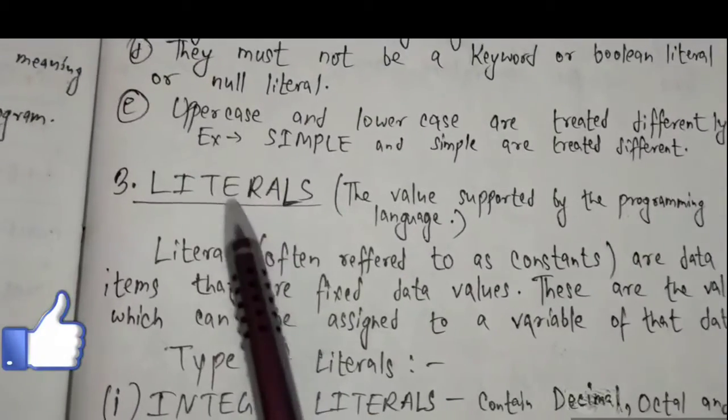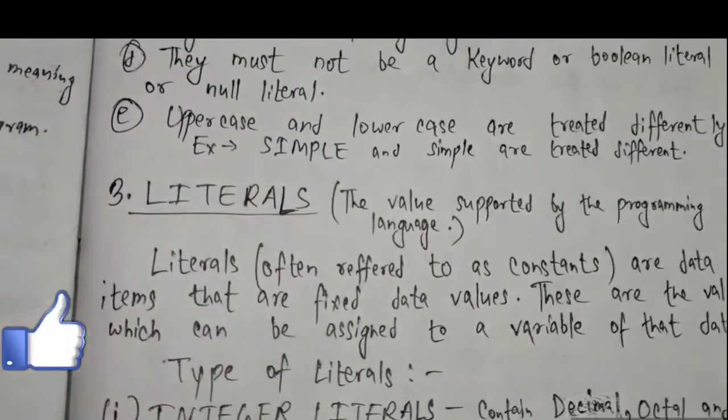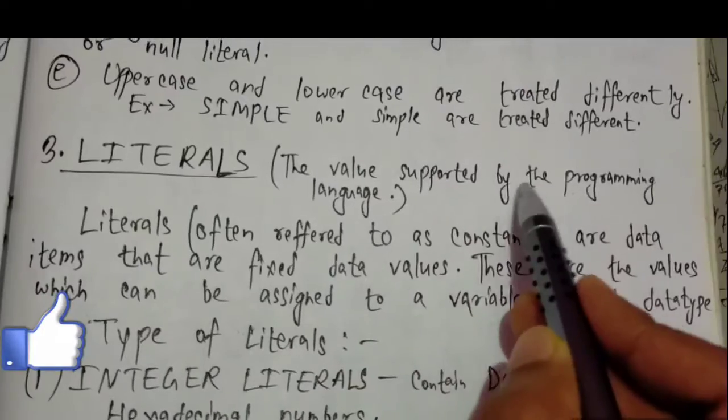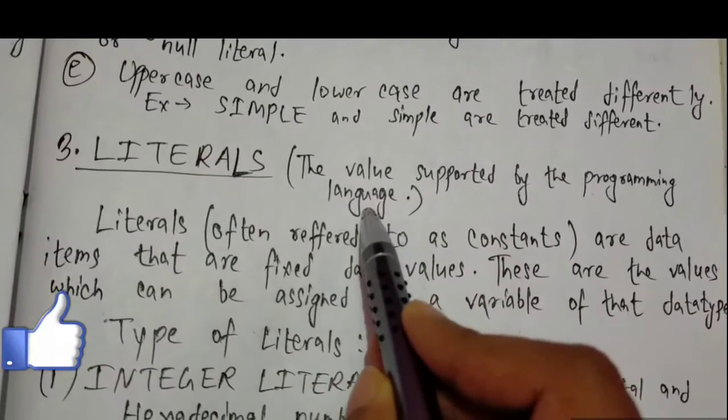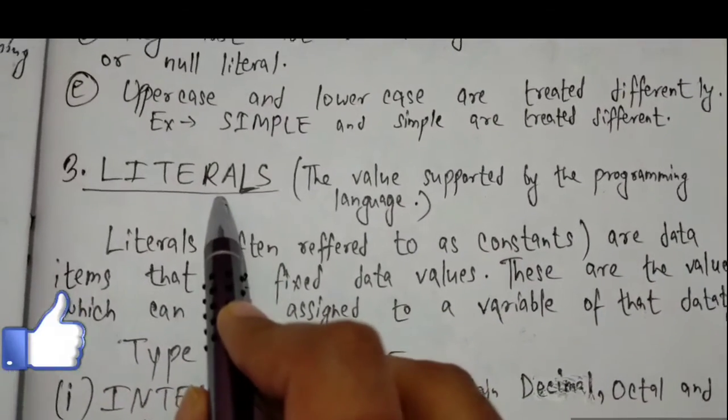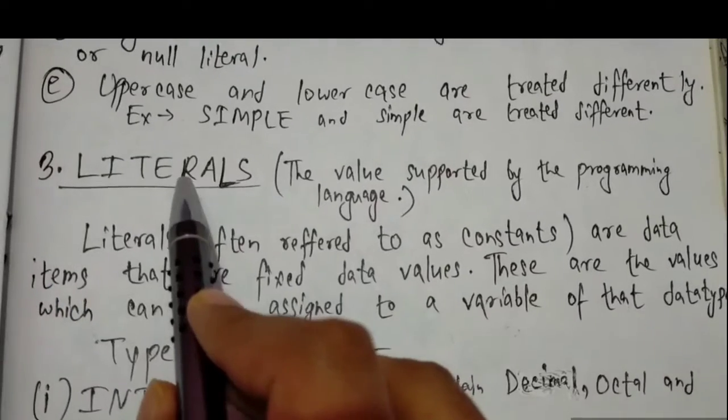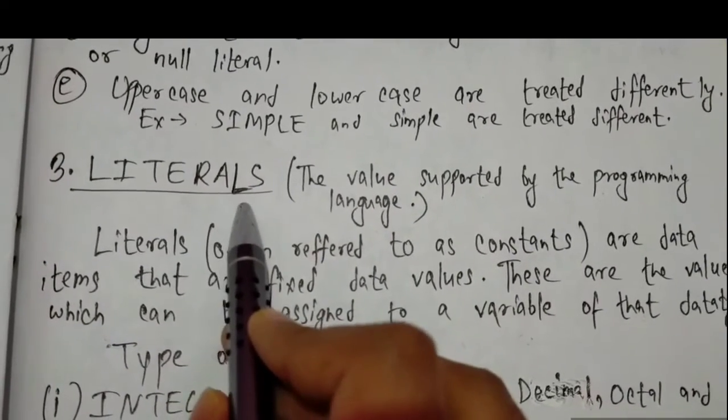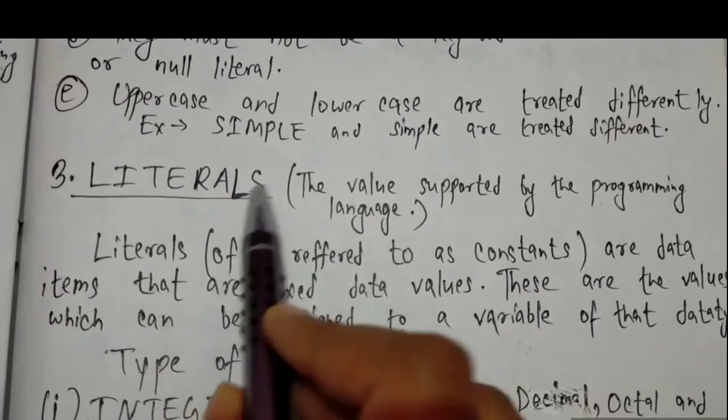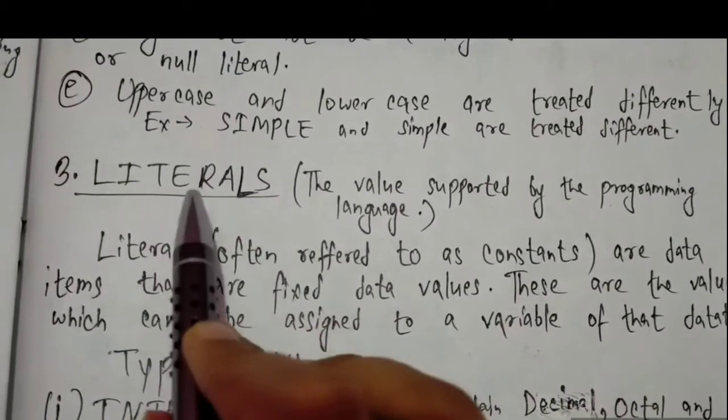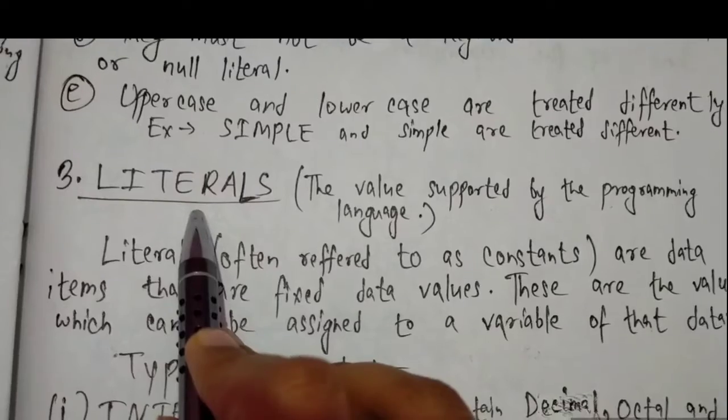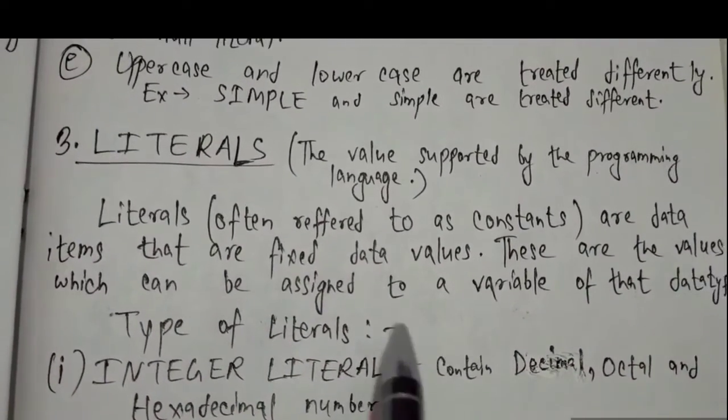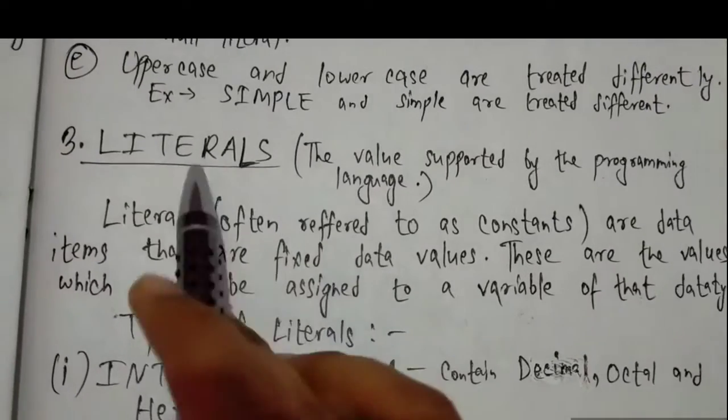Now we go to the next token - literal. The value supported by the programming language. Literals are constants. For example, if we are taking a value like our age - if our age is 1, 2, 3, this is an integer literal. That means integer literal can save this value, and that value is known as literal.